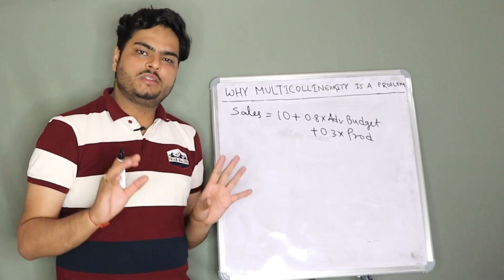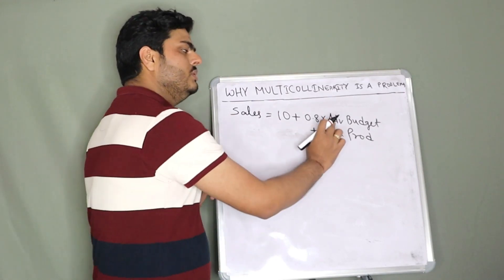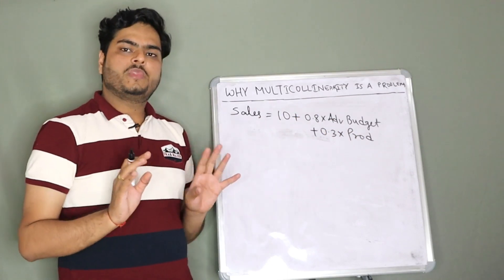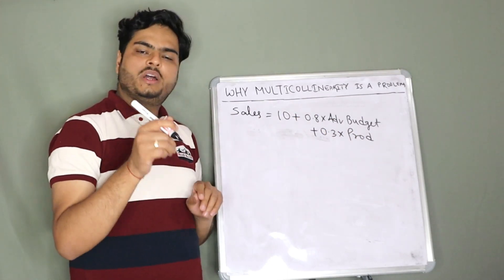How many independent variables do we have? Two: budget and production. How many target variables? One: sales for this marker.